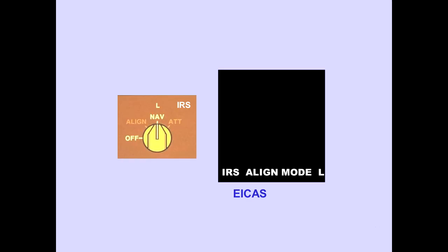After an internal self-test, the EICAS memo message, IRS Align Mode, is displayed, indicating alignment is in progress.